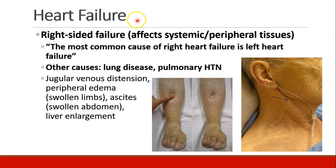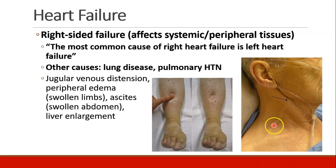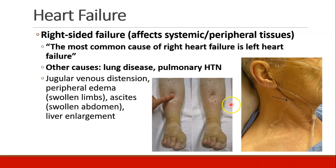Other causes of right-sided heart failure include lung disease or pulmonary hypertension. Patients can have jugular venous distension — you can see how a patient sitting up can have their jugular vein popping out. They can also have peripheral edema, swollen limbs, ascites which is swelling in the abdomen, and enlargement of the liver.